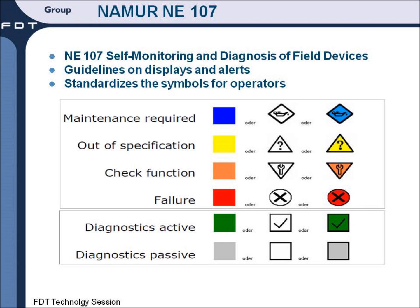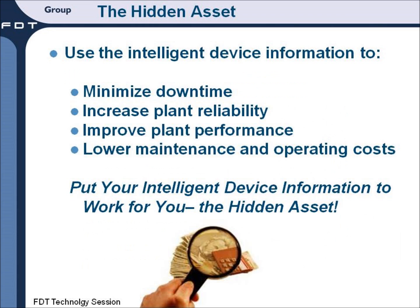The type of alert warning symbol has now been standardized by a group of users in Europe, referred to as Namur, and they have published a guideline called the NE107, as indicated on your screen, which is a guideline on displays and alerts. This particular set of guidelines standardizes the symbols for operators to make it easy to interpret the meaning of the alert for both the operator and for the technicians. The information in your intelligent device may be a hidden asset if you are not putting that asset to work.